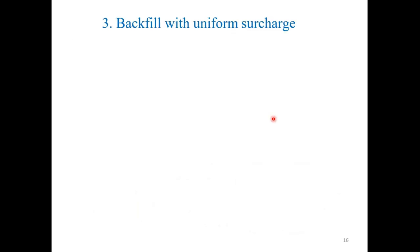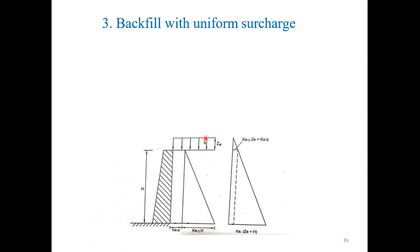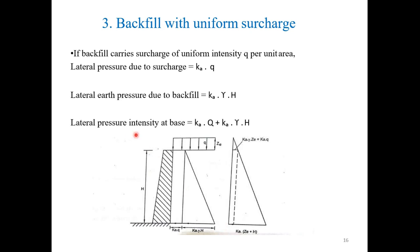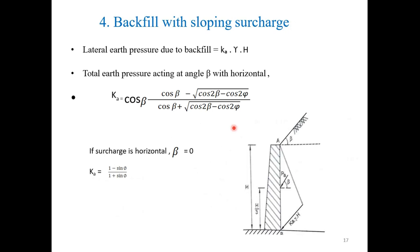Third case — backfill with uniform surcharge: You can see in the pressure diagram that a uniform surcharge load is acting on the retaining wall. There are two types of pressure: one due to the surcharge load, and one due to the backfill. The pressure due to the surcharge load is Ka × Q, where Ka is the coefficient of earth pressure and Q is the uniform surcharge load. The pressure due to backfill is Ka × γ × H. So the total pressure is Ka × Q + Ka × γ × H.